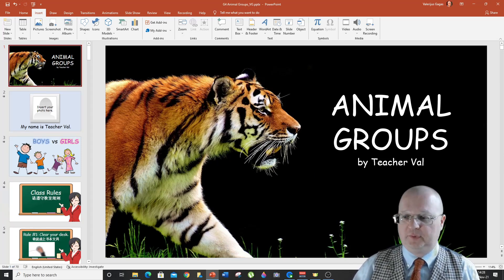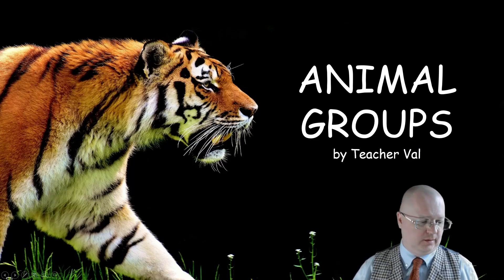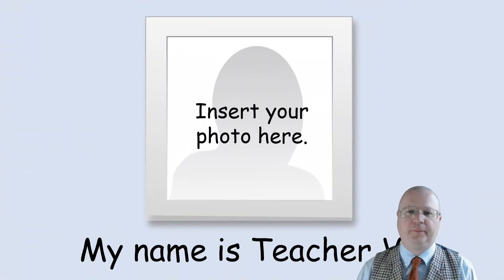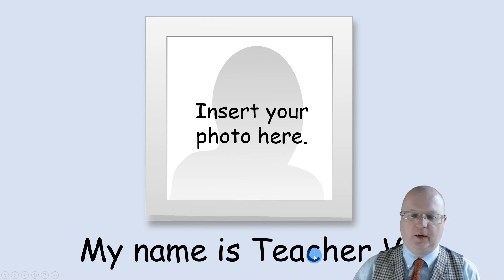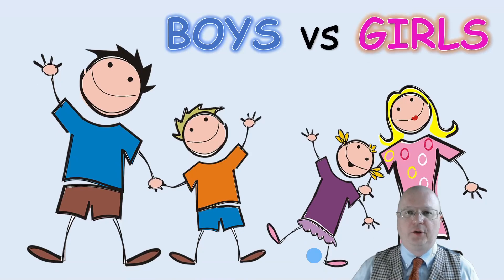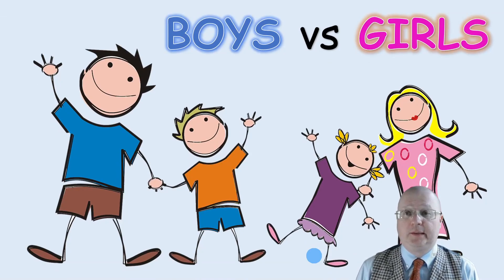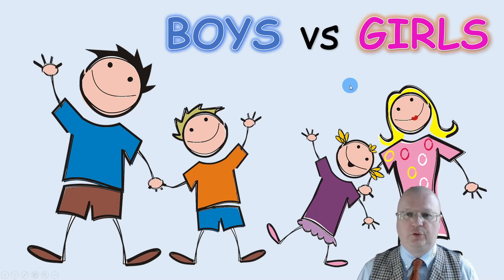So let's just go through it. It's called Animal Groups by Teacher Val. Here you can insert your own photo and change the name to your own. I split my class into boys and girls, but you can split them into two teams of your choice.